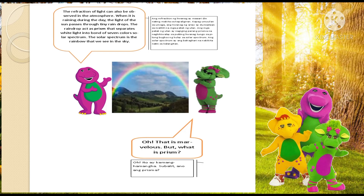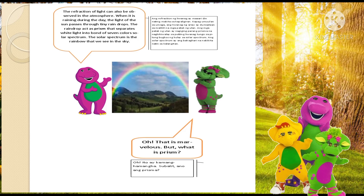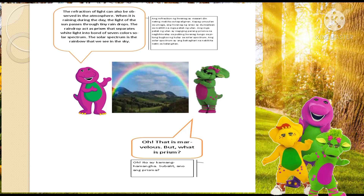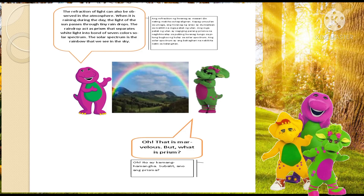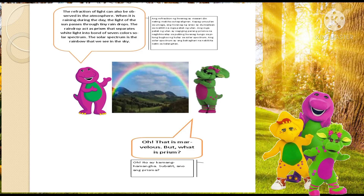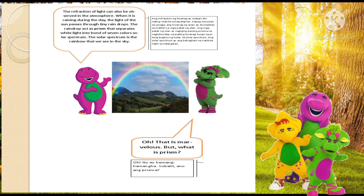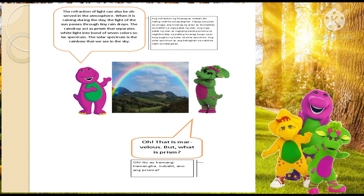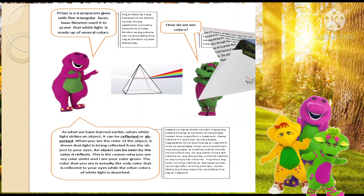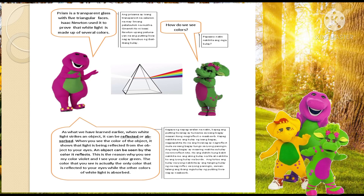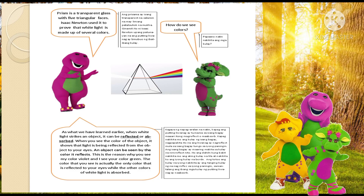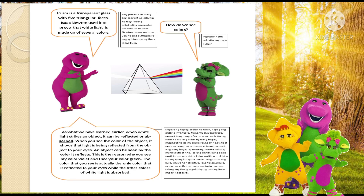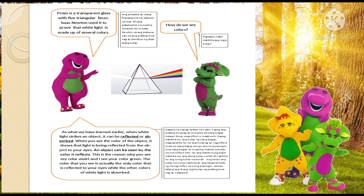The refraction of light can also be observed in the atmosphere. When it is raining during the day, the light of the sun passes through tiny raindrops. The raindrops act as a prism that separates white light into a band of seven colors of the solar spectrum — the rainbow that we see in the sky. A prism is a transparent glass with triangular faces. Isaac Newton used it to prove that white light is made up of several colors.